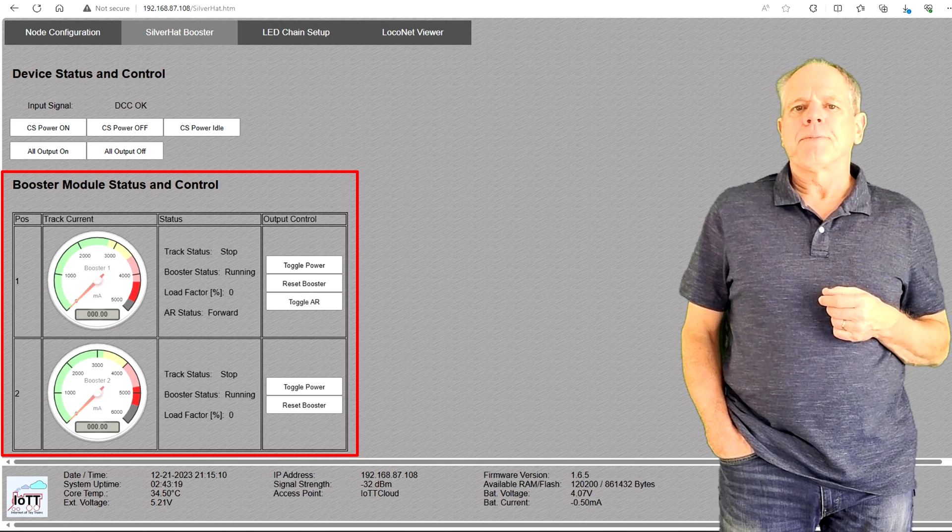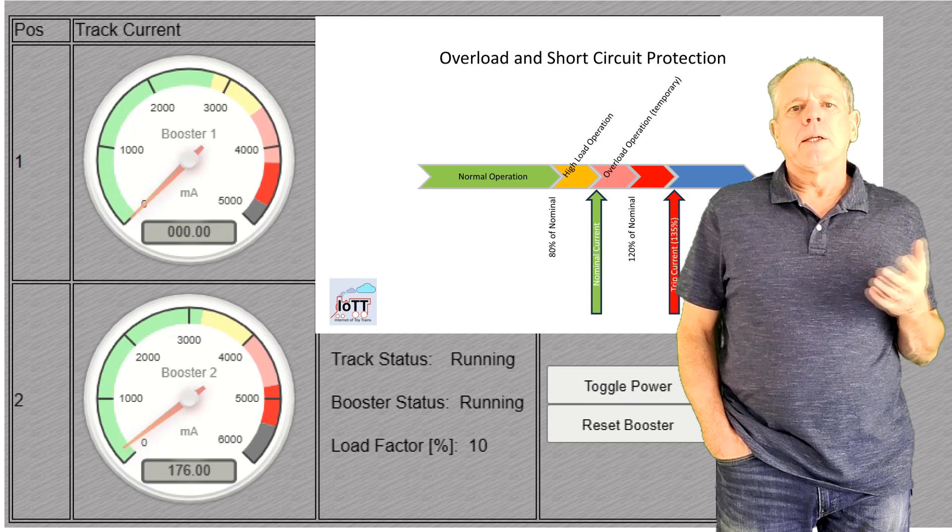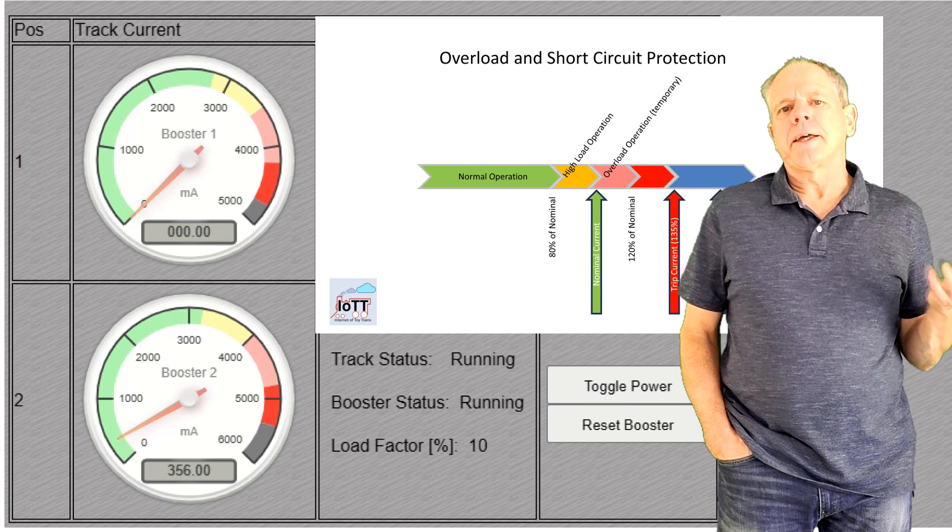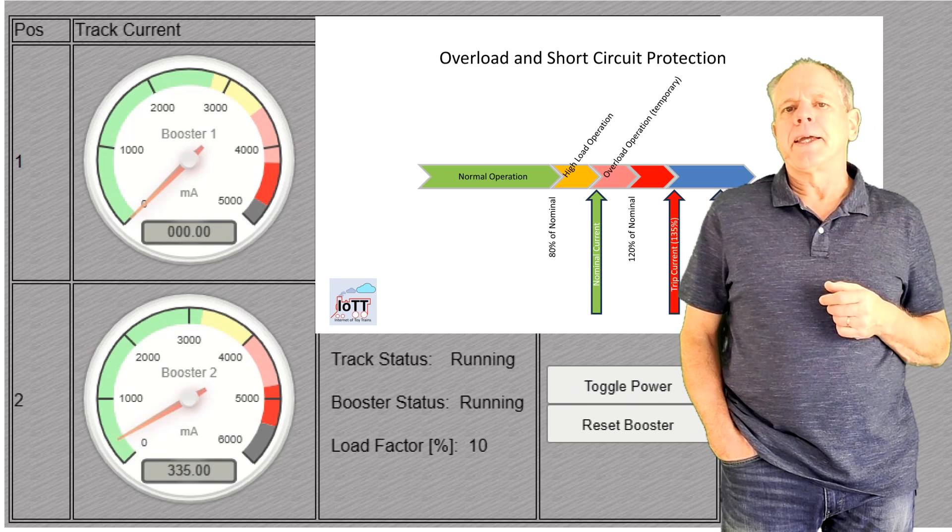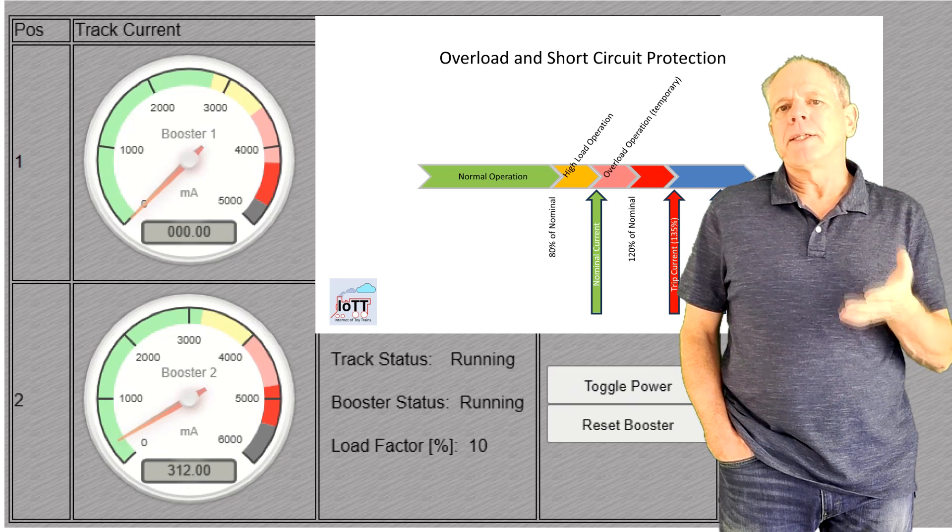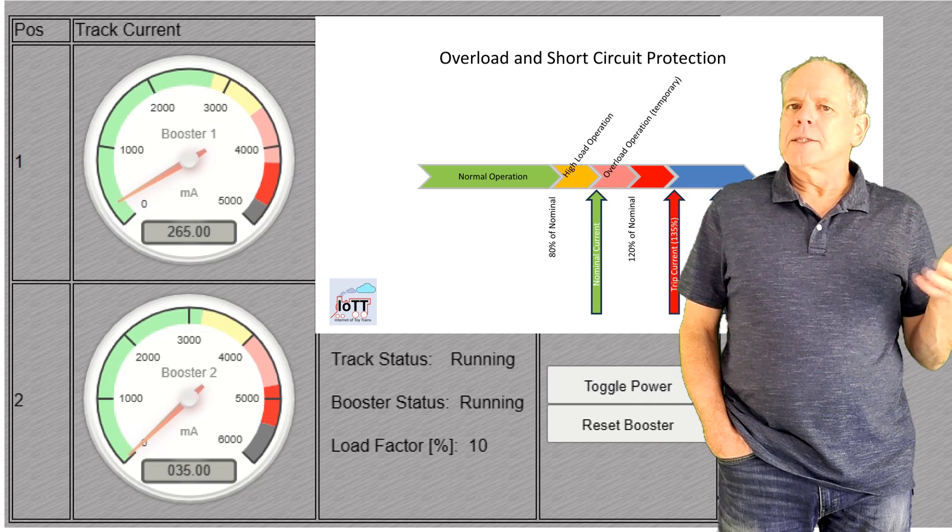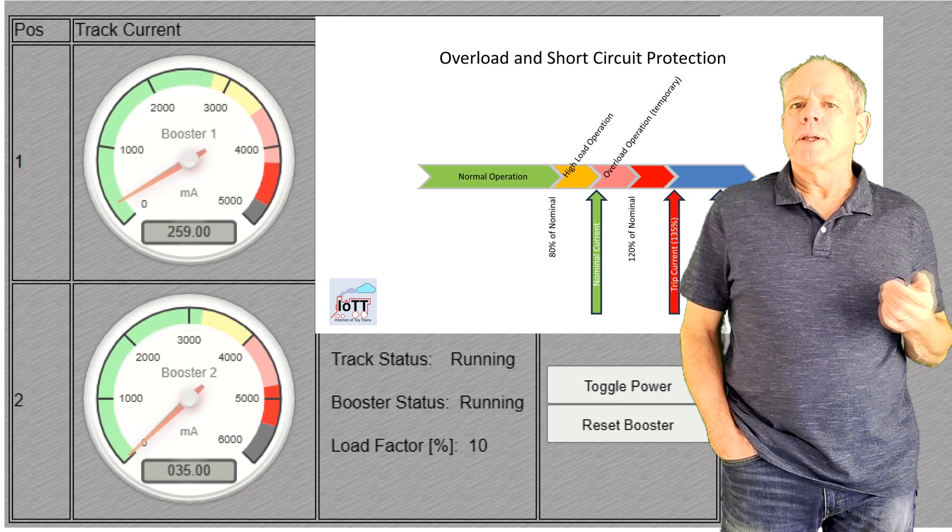It displays the booster current in milliamps. The color zones indicate the range the booster is operating in. The nominal current is right at the border between the yellow and the light red section. Yellow means high load and starts at 80% of the nominal current.